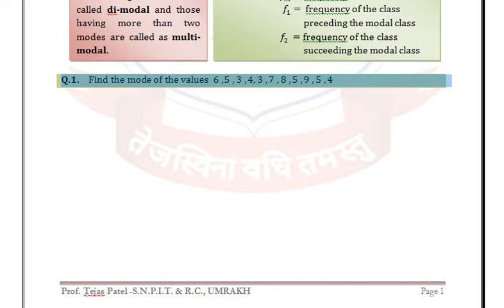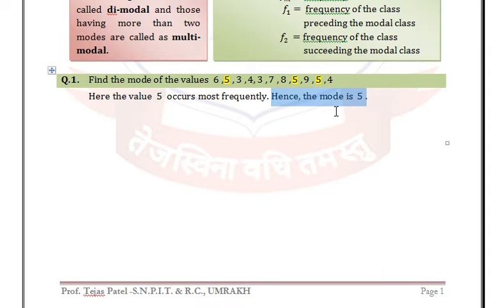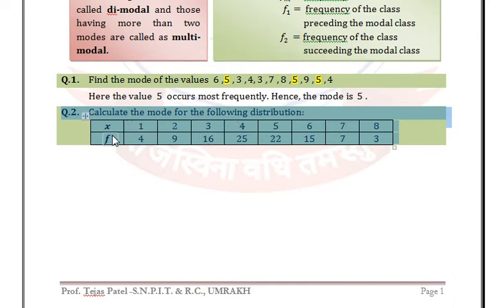Find the mode of the given values. Here we have only observations, so we find the value which is repeated the maximum number of times. We can see that 5 is the repeated value, so 5 is the mode.